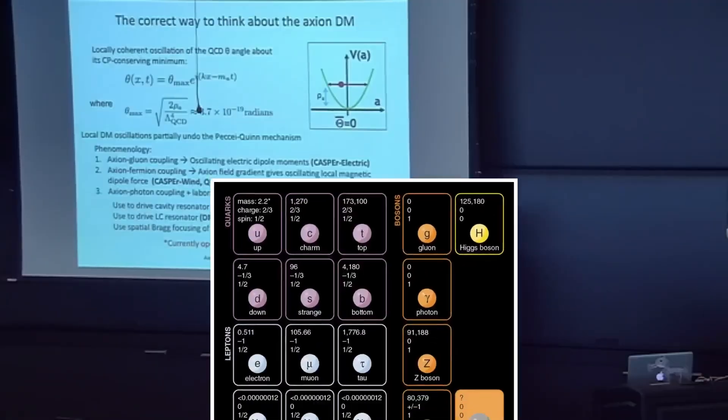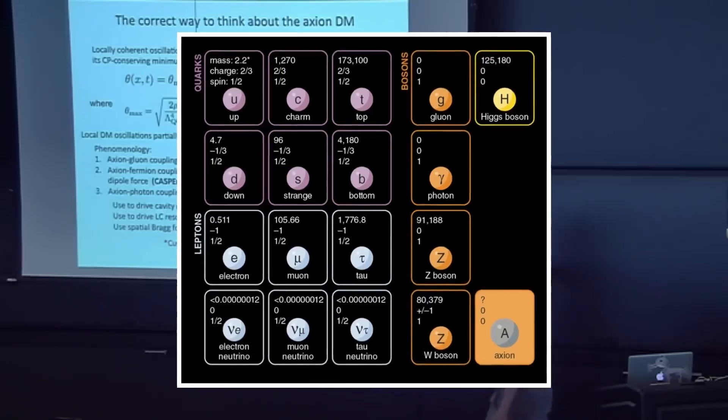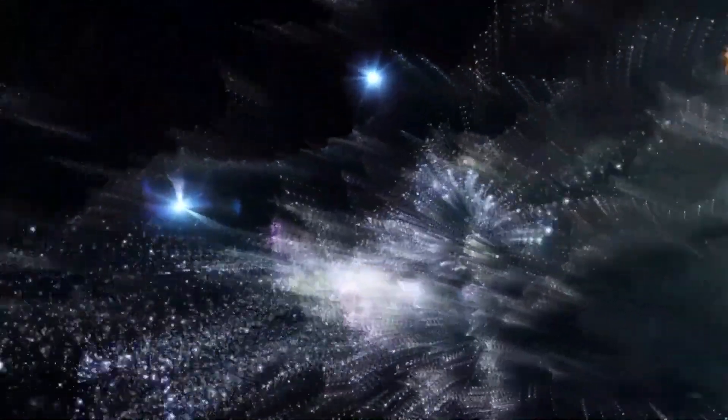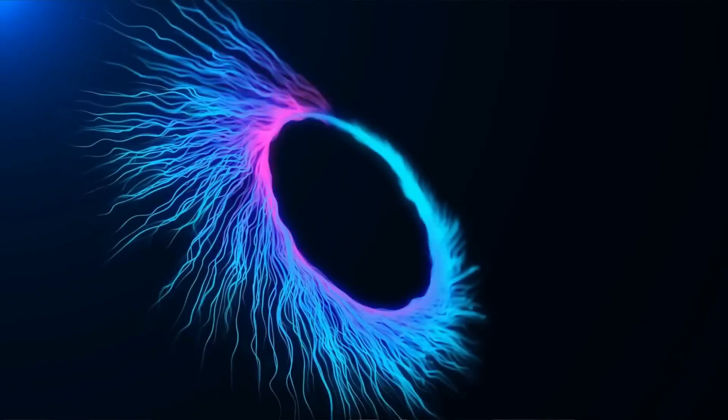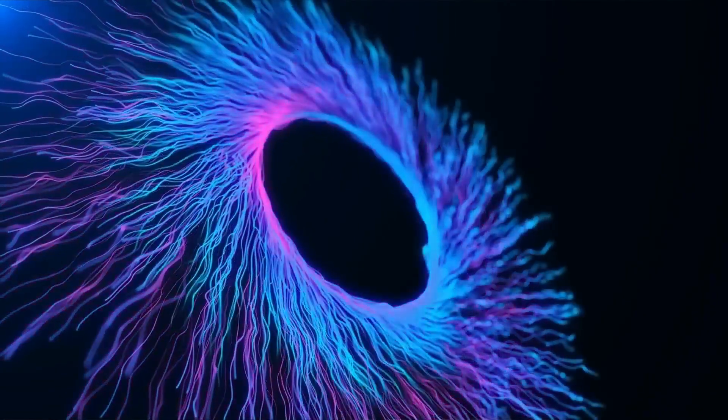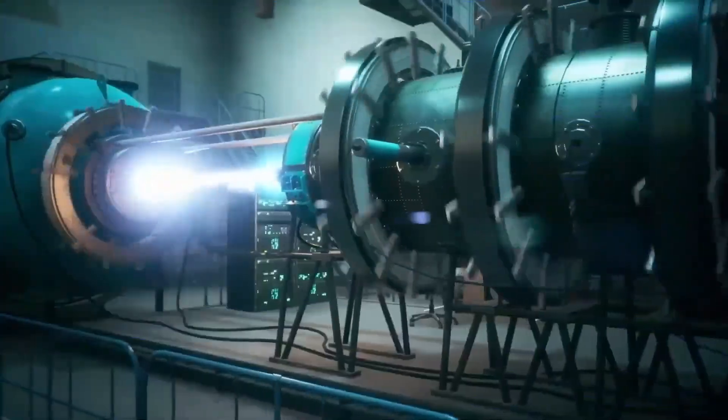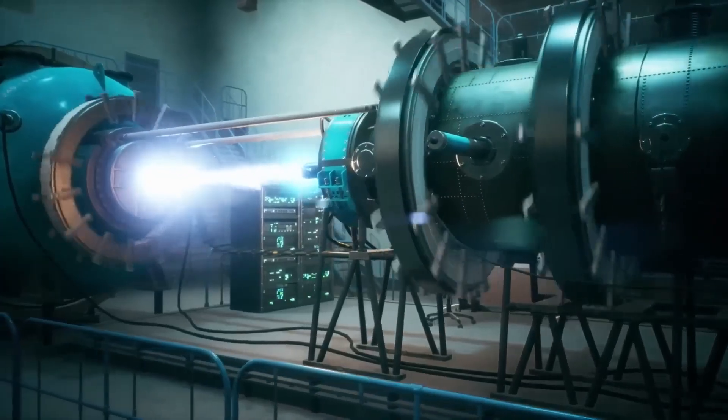To fix this, physicists hypothesized the existence of a new ultralight particle, the axion. But axions aren't just a theoretical fix for a mathematical issue—many scientists believe they could be the key ingredient of dark matter.